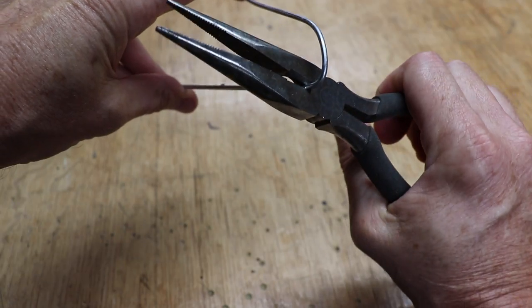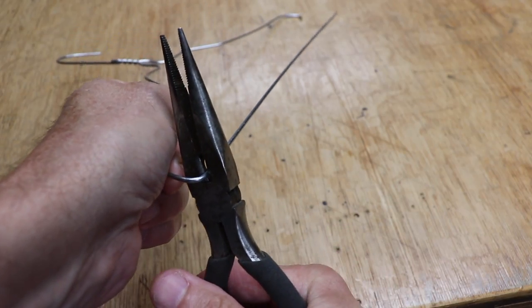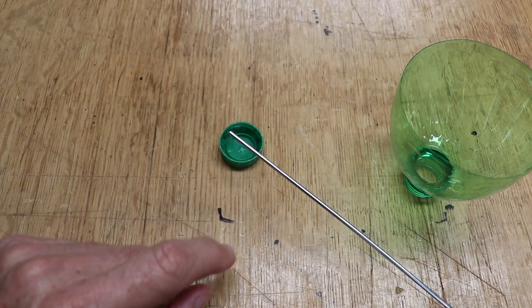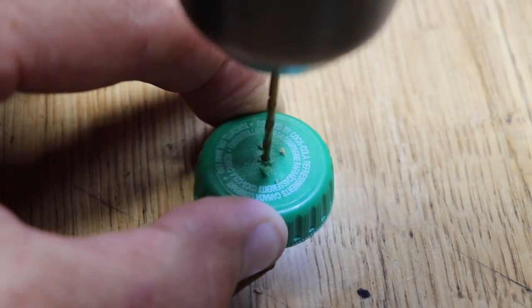Now get a coat hanger and cut the bottom straight part off. About 10 inches long is just perfect. Next, drill a hole in the cap smaller than the diameter of the coat hanger. You want to have a little bit of a resistance fit.